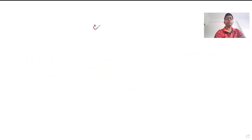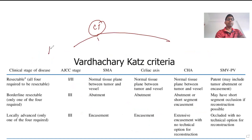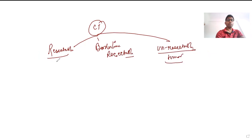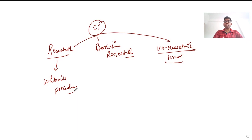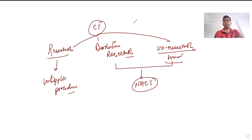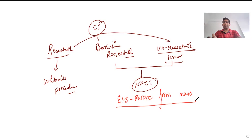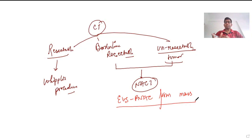Depending on CT scan findings, the patient can be identified as having a resectable tumor, borderline resectable tumor, or unresectable tumor. For a resectable tumor, we go for Whipple's procedure. For a borderline resectable tumor, we can either go for upfront surgery with intraoperative vascular reconstruction, or for neoadjuvant chemotherapy — this varies from center to center. If we go for neoadjuvant chemotherapy, an endoscopic ultrasound-guided FNAC of the mass is mandatory before starting chemotherapy. After neoadjuvant chemotherapy, restaging is done, and if there is downstaging amenable to resection, we go for Whipple's procedure.